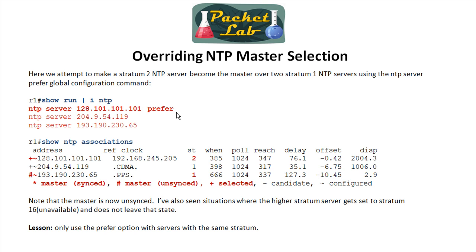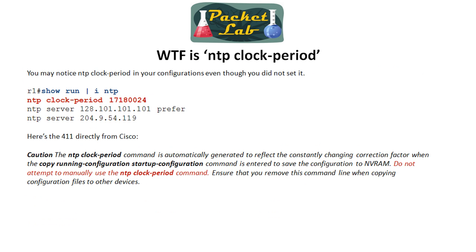What I've also seen is that the server you're trying to prefer gets its stratum set to 16 and it never changes — so it doesn't get any time from that. The lesson here is to use the prefer option sparingly, and if you do use it, make sure you're using it with devices that already have the same stratum.